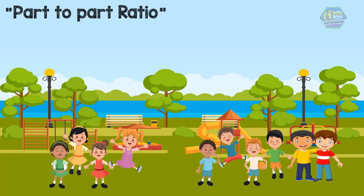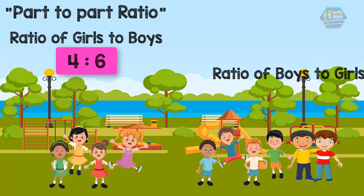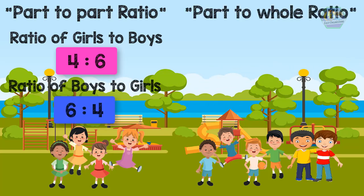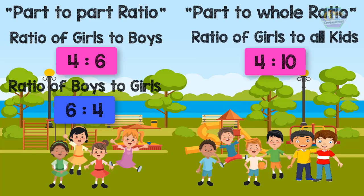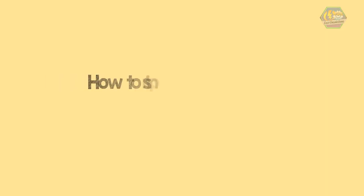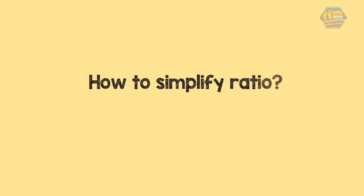In the part-to-part ratio we compared two things, like girls to boys and boys to girls. In the part-to-whole ratio we compared a part to the total number, like girls to all the kids and boys to all the kids. That's what ratio is all about. Now that you know how to get a ratio, let's discuss how to simplify a ratio.